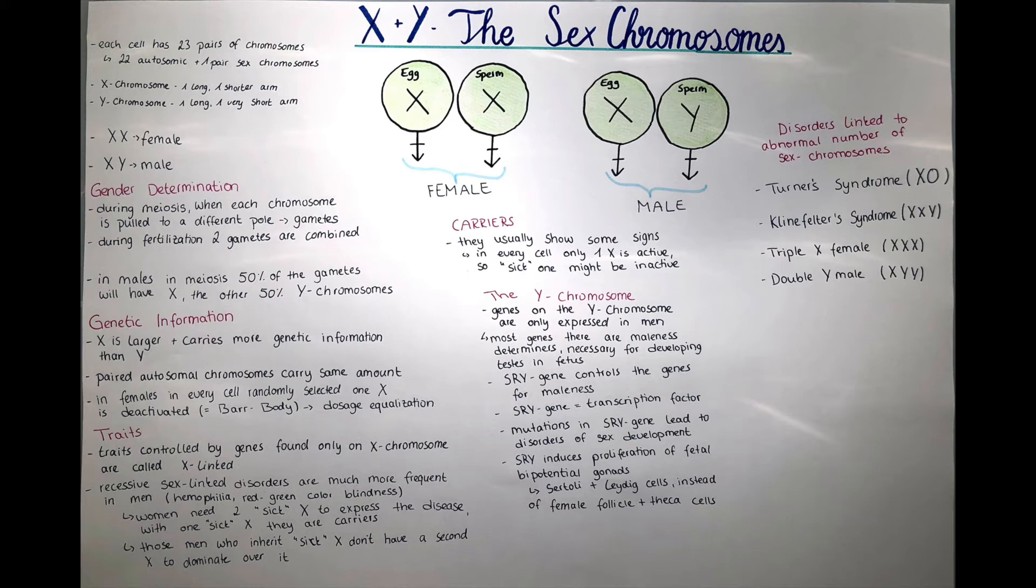Now we're going to talk about the genetic information concerning the X and the Y chromosome. The X chromosome is larger and carries more genetic information than the Y chromosome. While in paired autosomal chromosomes, the homologous chromosomes carry the same amount of genetic information.